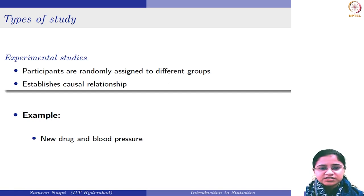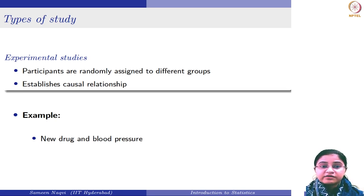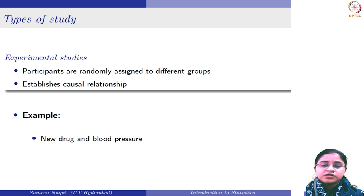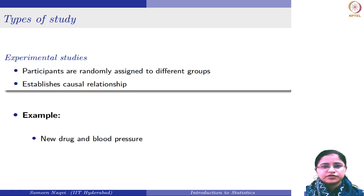If I had conducted this as an observational study, there would be confounding variables — for instance, age could be one, gender could have played a role, and dietary habits could have played a role. But since I have conducted it as an experiment and randomly divided participants into two groups, I have taken care of that. Any age group or dietary habit can be present in either group, so I am not biased in assigning them.